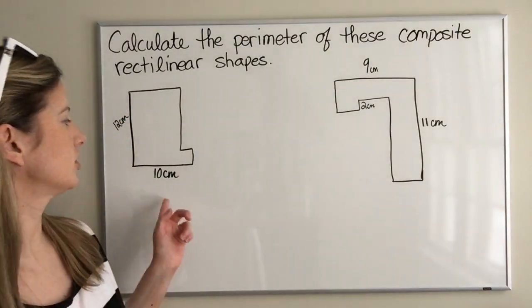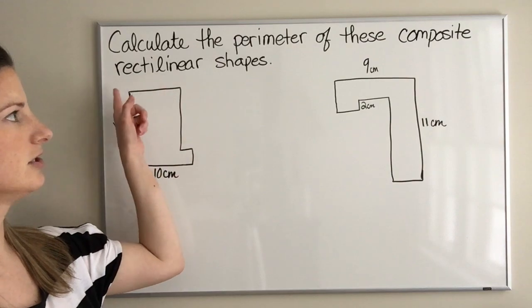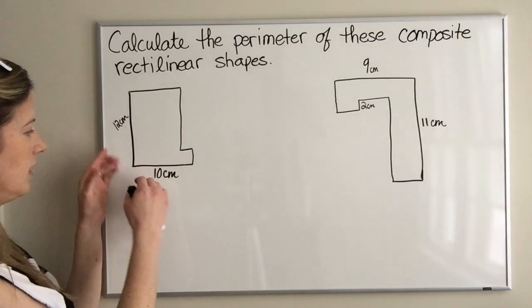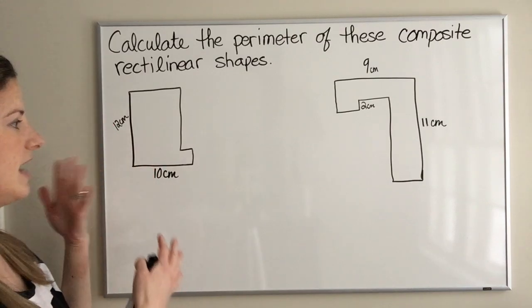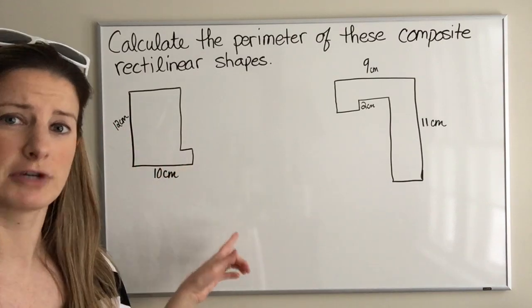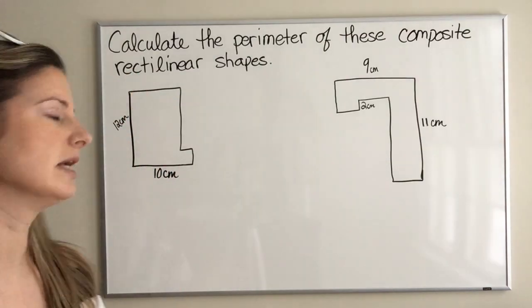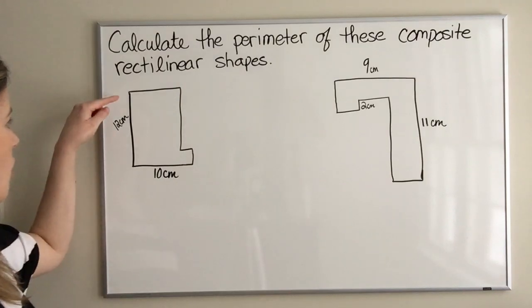Let's take a look at this first one. The first thing you need to know is what rectilinear means. It basically means that all of the sides when they come together form a right angle. That's important for us to know because I did draw these freehand, so if anything looks slightly off just assume it's a straight line.